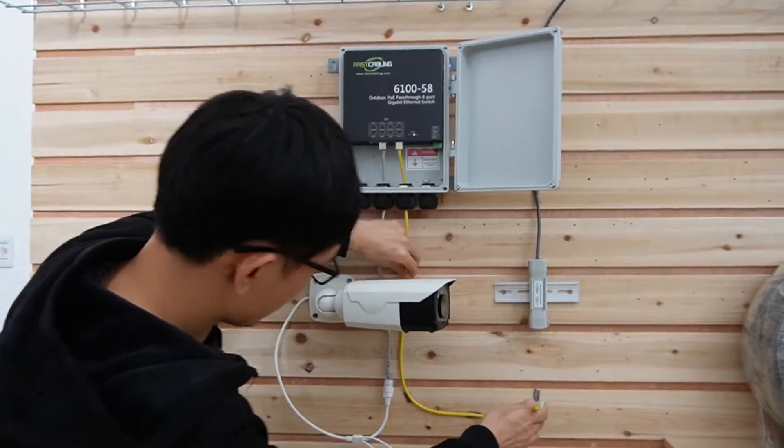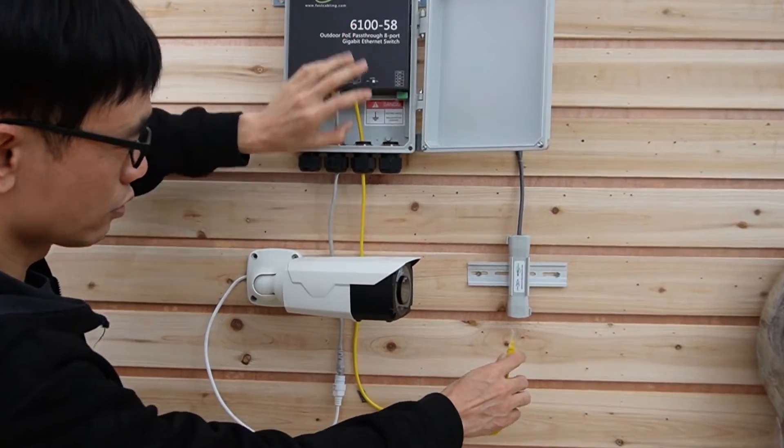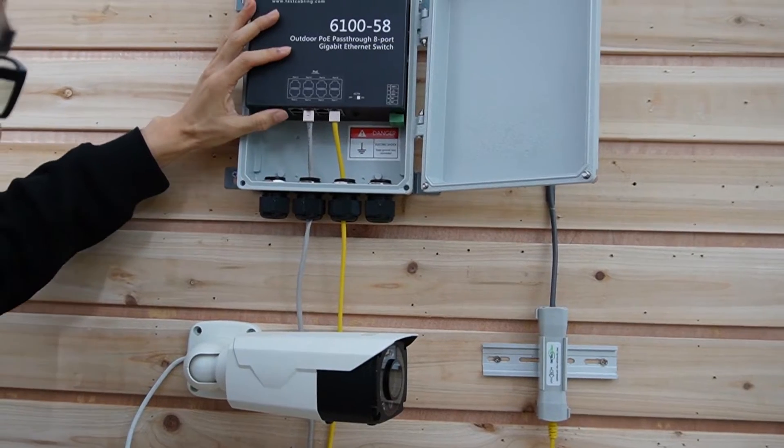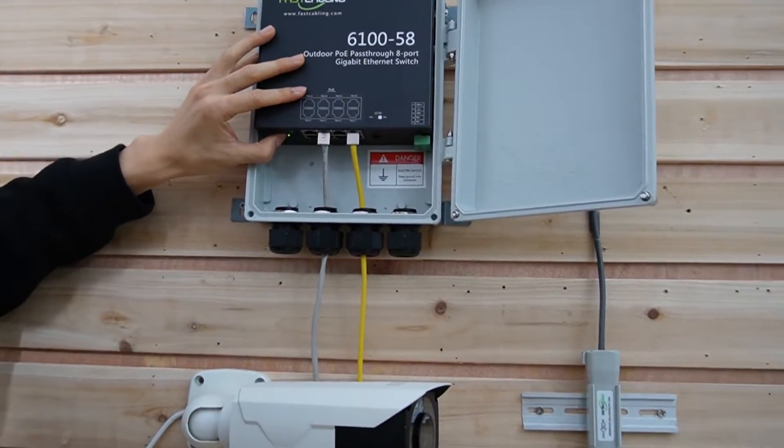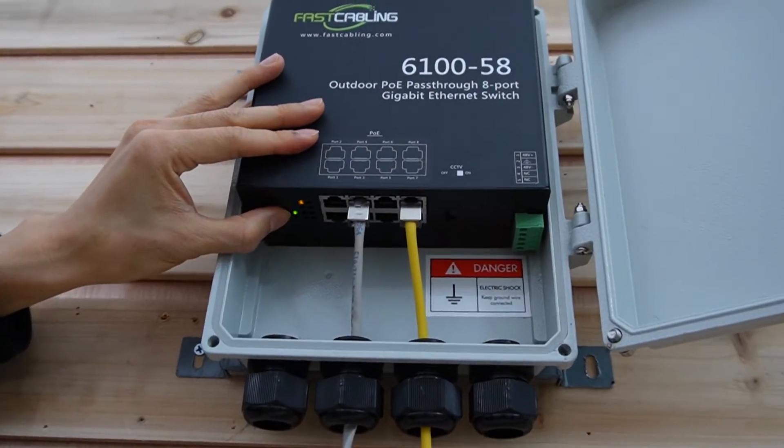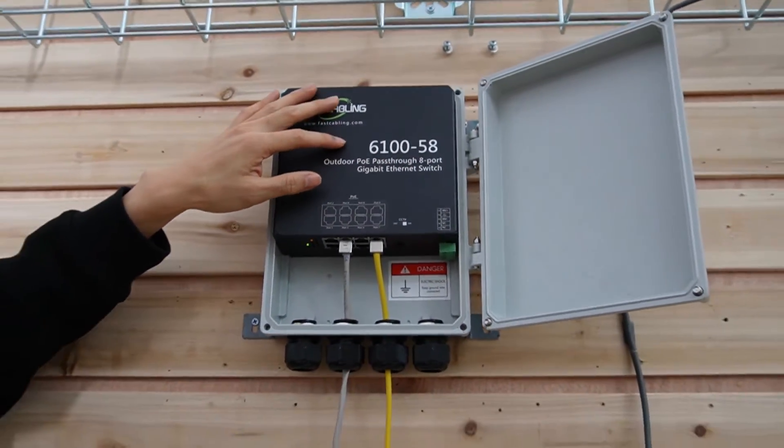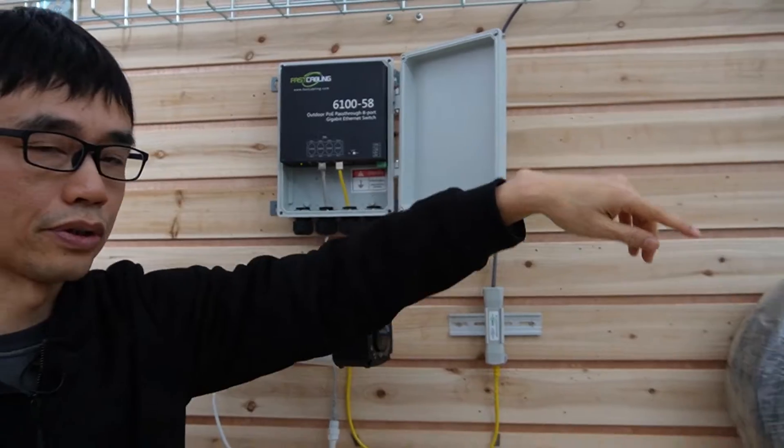Okay, let me just connect this cable, this patch cord to the PoE extender. Once I connect it, if we look closely, we can see the indicators on, which means this network switch is getting the power from the PoE switch.